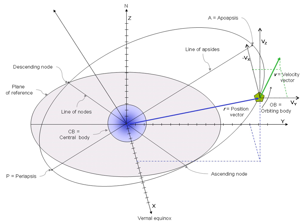In astrodynamics and celestial dynamics, the orbital state vectors of an orbit are Cartesian vectors of position r and velocity v that together with their time t uniquely determine the trajectory of the orbiting body in space.